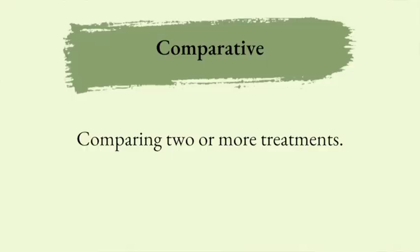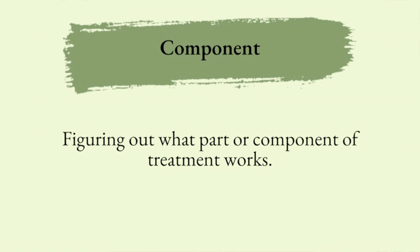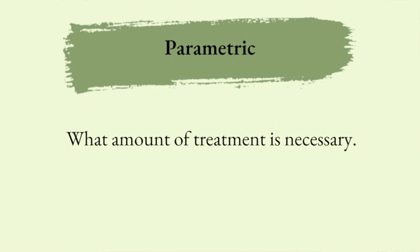So maybe make some flashcards and just remember these words: comparative — comparing two or more treatments; component — figuring out what part or component of treatment works; and parametric — the metrics, the measurement, what amount of treatment is necessary. I hope you guys found this video useful. Happy studies! Don't forget to like, subscribe, share us with your friends, and drop us a comment or question if you have any help that you'd like.